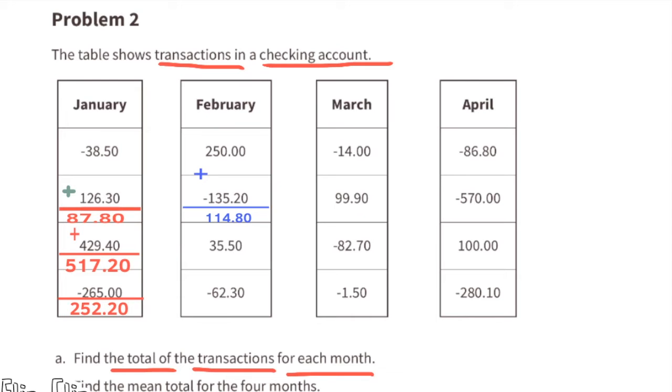They start by depositing $250, and then a withdrawal where they subtracted $135.20 from their account, leaving a balance of $114.80. But then they deposited $35.50, making the account balance $150.30.